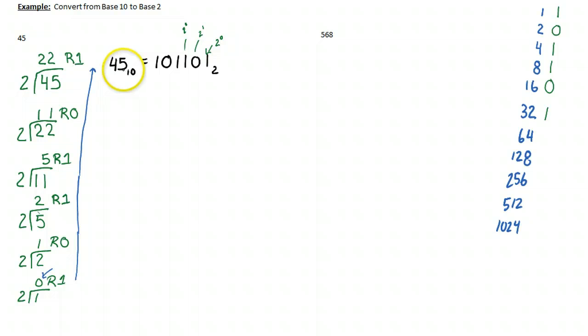And what you'll start to notice is that anytime you have an odd number in base 10, you always have the rightmost bit flipped on. And when I say on, I mean 1. So this is a method you can apply to convert from base 10 to base 2 without having to go through this division process.